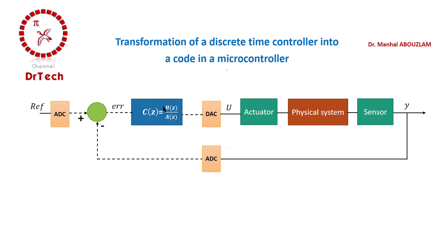Since the controller is in discrete time, the control input U is a digital signal, but the activator receives only an analog signal. That's why we have put here a digital-to-analog converter (DAC) which will convert the digital signal into an analog signal to be applied to the activator, which then applies a physical quantity such as a force in Newtons to the system.